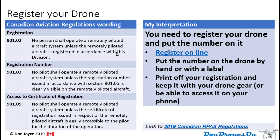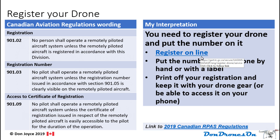This is registering your drone. There are three regulations associated with it: registration itself, the registration number, and access to it. What it means is you need to register your drone — each and every one of them — and put the number you receive on your drone. You register online; it's a five dollar fee. Put the number that you receive in an email on the drone by hand or with a label.